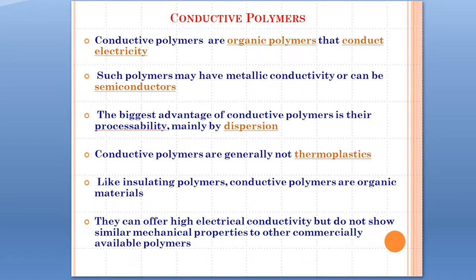Conducting polymers and conductive polymers are one and the same. Conducting polymers conduct electricity through them from one point to another point, whereas insulators do not conduct electricity. Therefore, conducting polymers are those organic polymers that conduct electricity through them. These conducting polymers may have metallic conductivity or can act as semi-conductors. The biggest advantage of conducting polymers is their processability, mainly by dispersion.